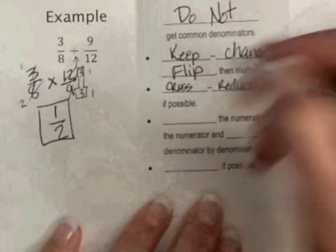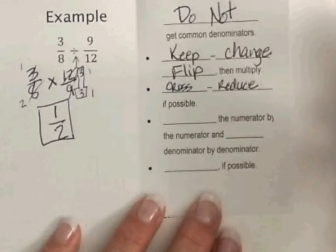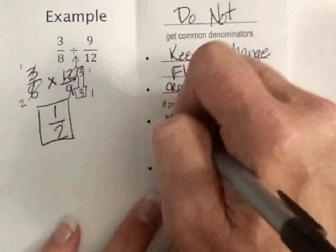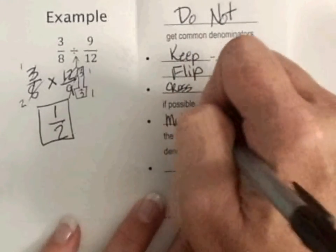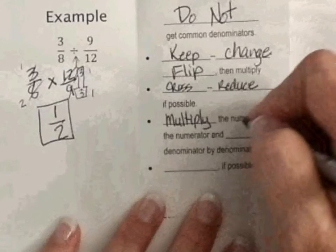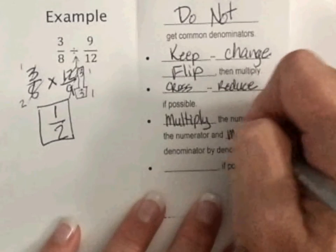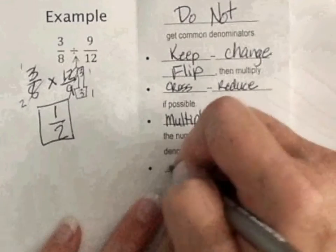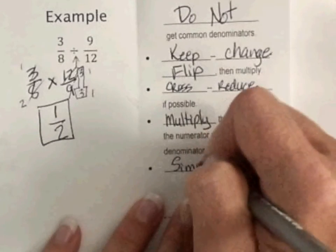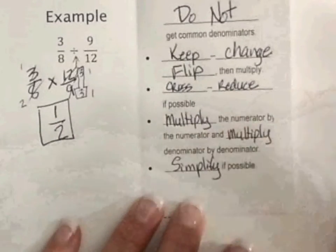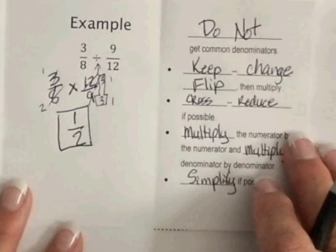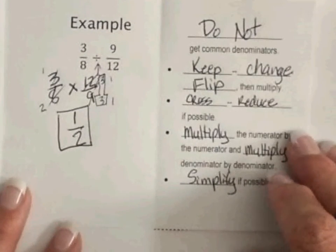So, to fill in our words over here, once we do our keep, change, flip, we're going to cross-reduce, we're going to multiply the numerator by the numerator and multiply the denominators by each other. So, again, if you don't want to cross-reduce, just multiply across and you can simplify after you're finished.